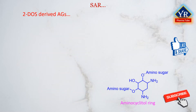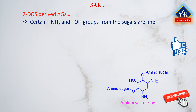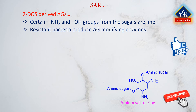The sugar units that extend from the central aminocyclitol nucleus contain substituents that are also needed for antibacterial activity. Certain amine and hydroxyl groups that emanate from these sugars are important for ribosomal binding. Resistant bacteria can produce aminoglycoside-modifying enzymes that chemically alter these key amine and hydroxyl moieties, and the end result is that the modified aminoglycoside is unable to undergo ribosomal binding, thus antibacterial activity is lost. Several analogs that lack these features have been chemically produced and shown to be inferior antibacterials.